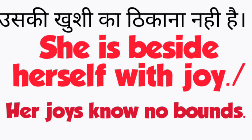She is beside herself with joy — she is beside herself with joy. And the next sentence: if you have to say that her joys know no bounds — her joys know no bounds. Here I say the sentences; you can change the subject in each sentence.